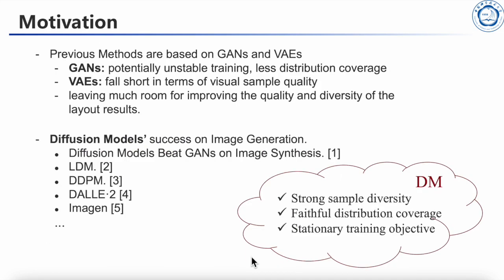Motivation. With the development of deep-generative models, data-driven methods based on GAN and VAE have progressed. However, studies have shown that both GANs and VAE have room for improvement in terms of quality and diversity. Drawing inspiration from the recent success of the diffusion model in image generation, we explore the potential of introducing diffusion model to layout generation field. Diffusion model offers desirable properties such as strong sample diversity, faithful distribution coverage, a stationary training objective, and easy scalability.